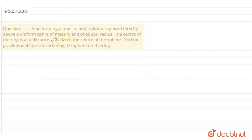This question is: A uniform ring of mass m and radius a is placed directly above a uniform sphere of mass M and equal radius. The center of the ring is at a distance root 3a from the center of the sphere. Find the gravitational force exerted by the sphere on the ring.